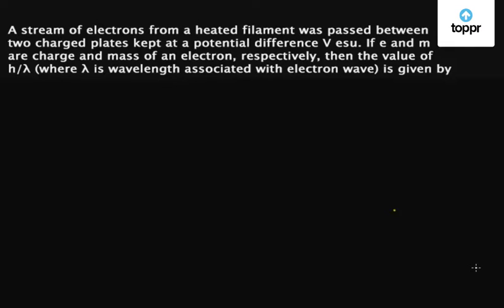This is a question on modern physics. A stream of electrons from a heated filament was passed between two charged plates kept at a potential difference V. If e and m are charge and mass of an electron respectively, then the value of h/λ, where λ is the wavelength associated with the electron wave, is given by: